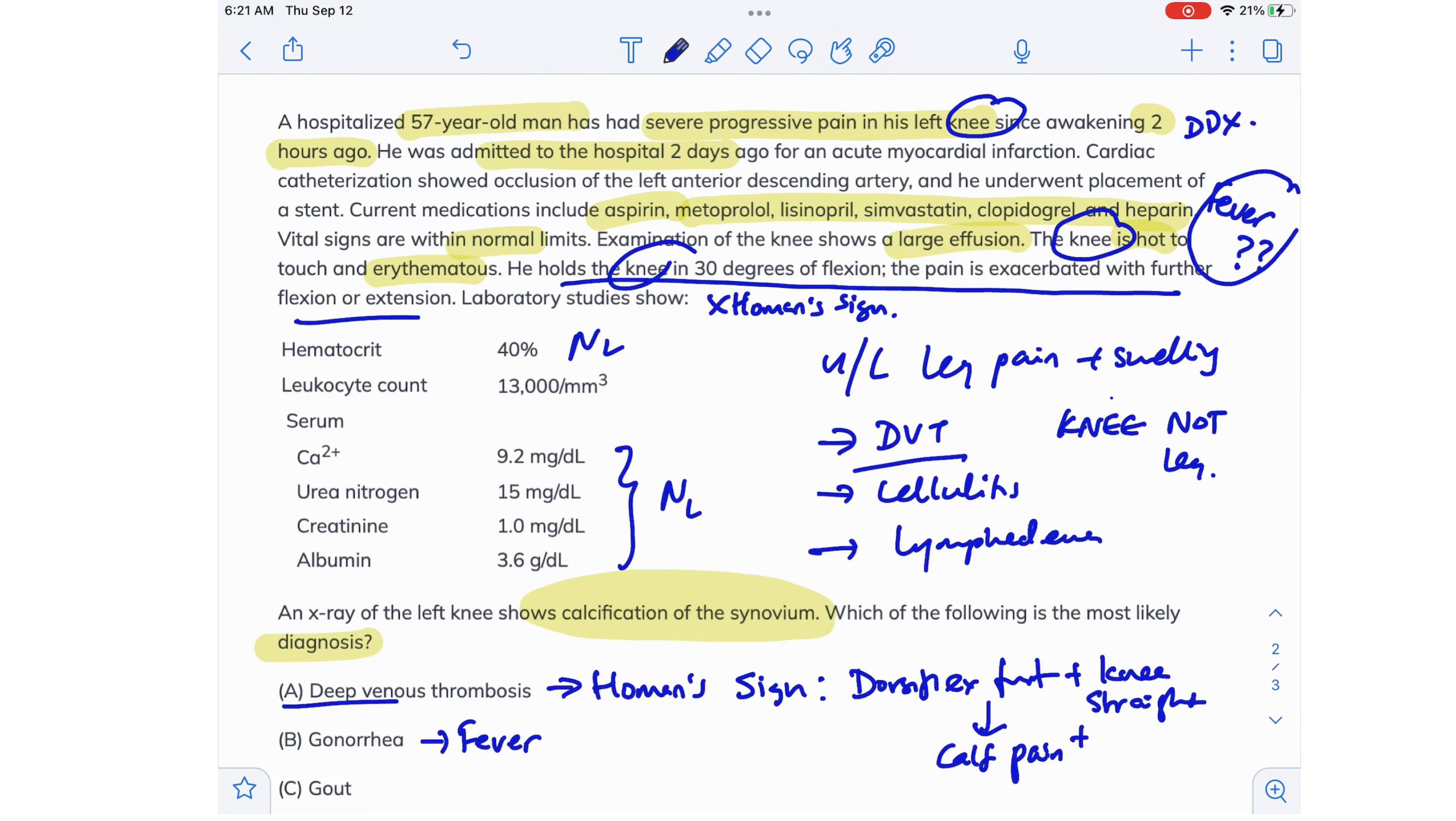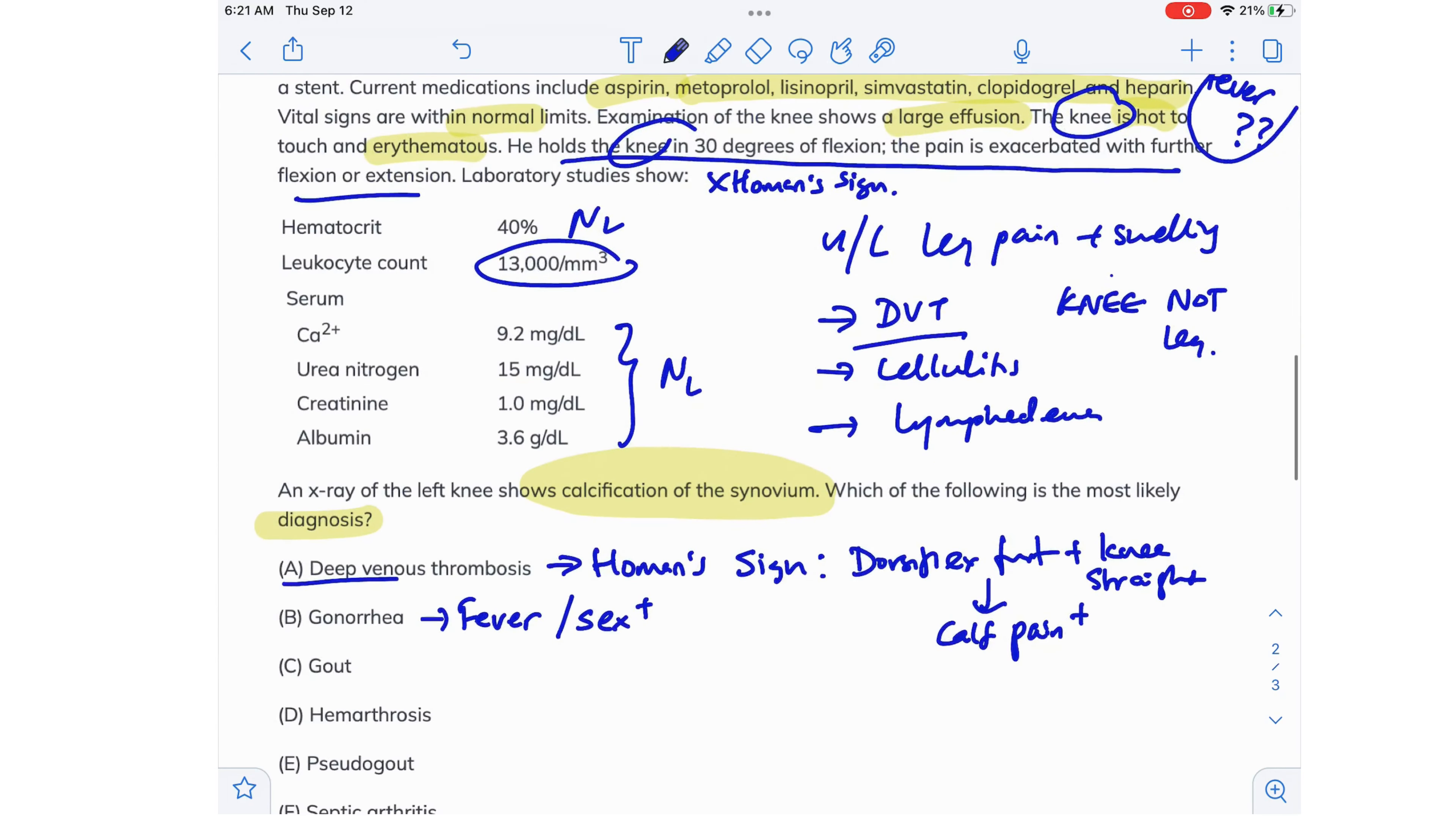And also gonorrhea is a common condition in sexually active people and the question doesn't mention anything about his sexual activity. And this patient's white count is only slightly elevated. When it comes to infections like gonorrhea, we need to have a look at the synovial white count rather than the serum white cell count. So a synovial white blood cell count of more than 50,000 would indicate this is gonorrhea that we are dealing with. So this is not gonorrhea.